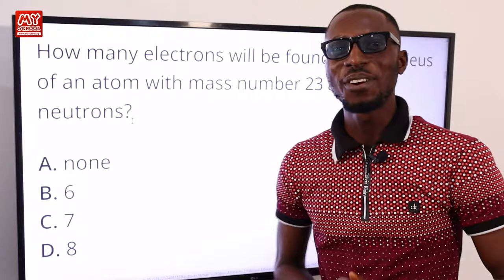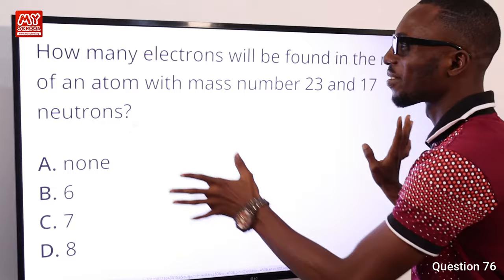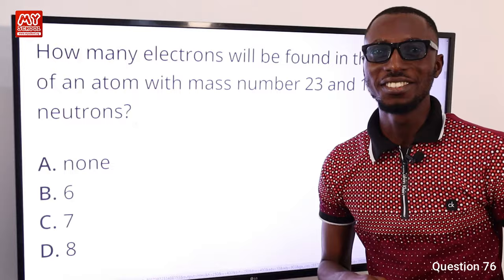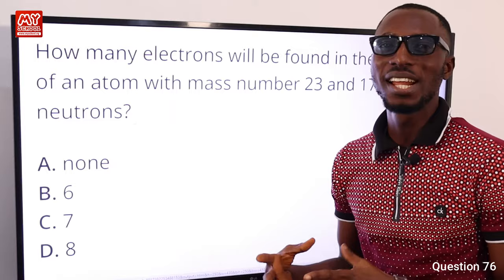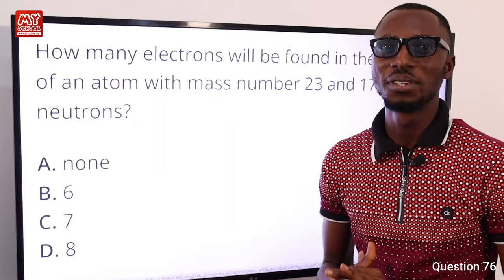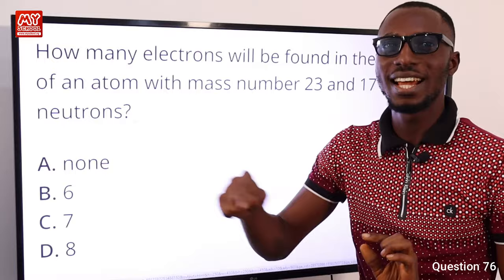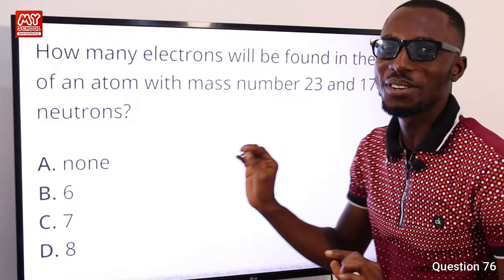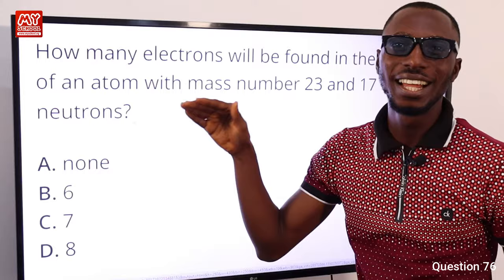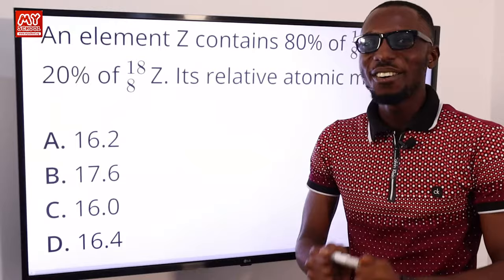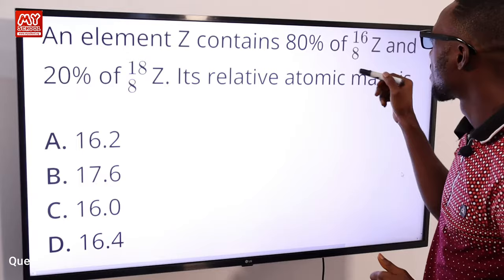Question 76: How many electrons will be found in the nucleus of an atom with mass number 23 and 17 neutrons? Inside the nucleus we only have protons and neutrons — electrons are found outside the nucleus in their shells. So there are zero electrons in the nucleus. Option A.